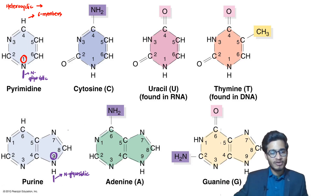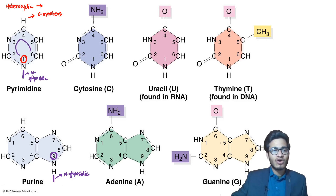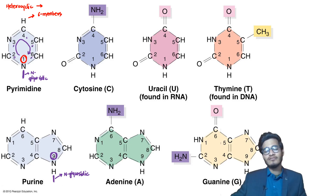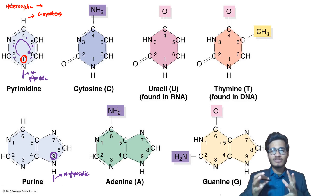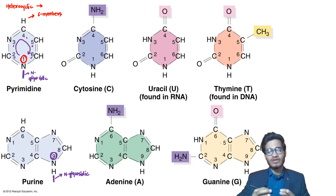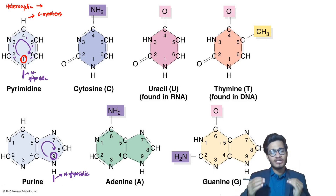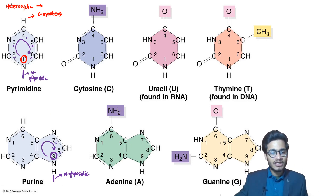Both position 1 (pyrimidine) and position 9 (purine) are at the lowest/downward position. Starting from the most downward position — 1 — you rotate clockwise: 1, 2, 3, 4, 5, 6. That's the numbering for pyrimidine. The simple trick is: since nitrogen number 1 in pyrimidine forms the glycosidic bond, it must be at the bottom, and then you count clockwise. Similarly, for purines, position 9 must be at the bottom, and 7, 8, 9 are counted clockwise.